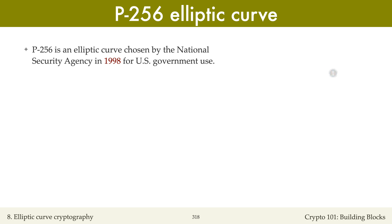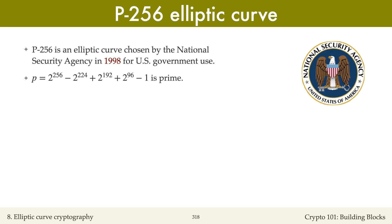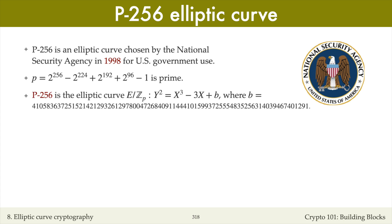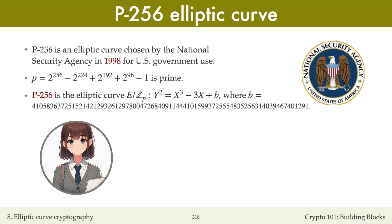P256 is an elliptic curve chosen by the National Security Agency in 1998. It was intended for U.S. government use and was standardized by NIST. P256 has now been deployed widely around the world. This elliptic curve is defined over the integers modulo p, where p is a very nice 256-bit prime number. The elliptic curve equation in P256 is y² = x³ − 3x + b, where b is an integer between 0 and p−1. The elliptic curve parameter a in P256, P384, and P521 is −3. This value was chosen because it slightly speeds up the formula for point addition.